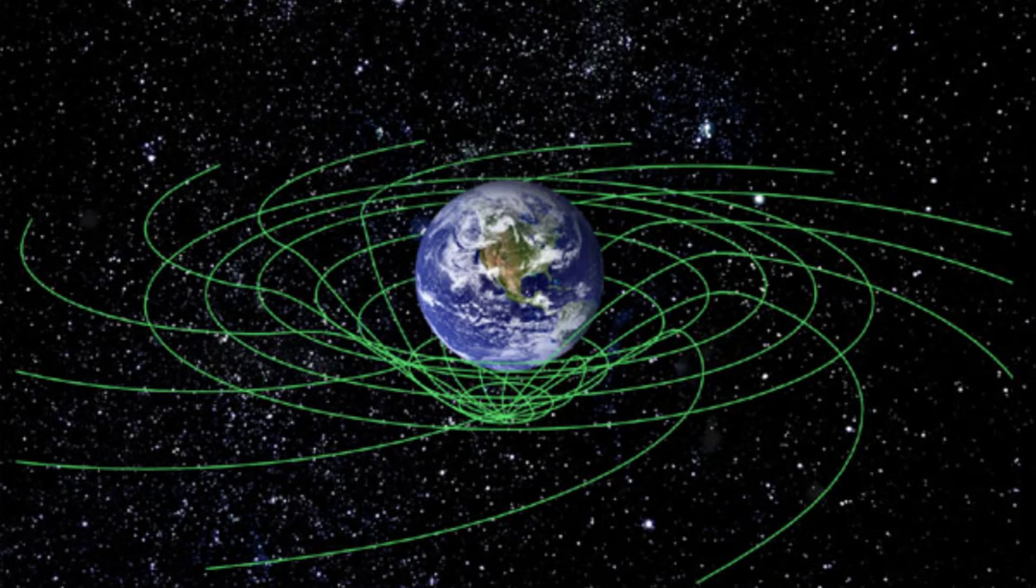The theory of general relativity states that gravity is caused by the fabric of space and time. Space and time is related and forms a fabric. And when massive objects are in that fabric, they cause indentations that basically create gravity.